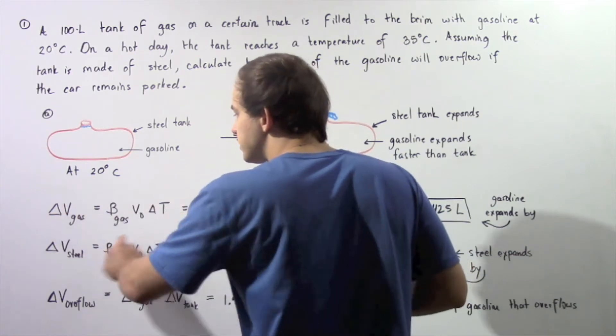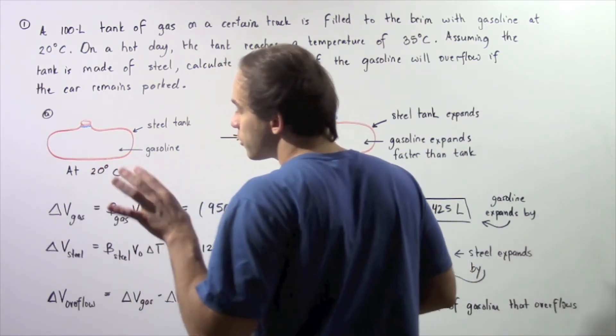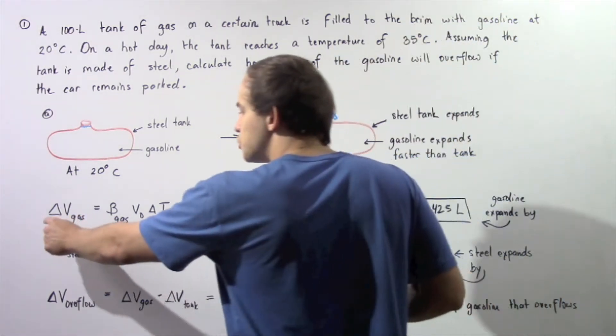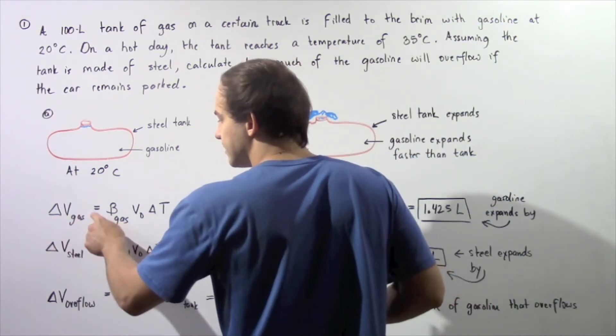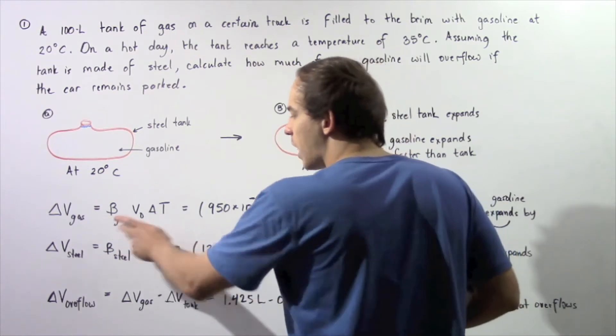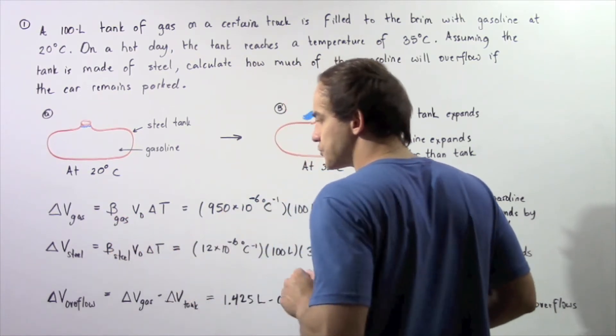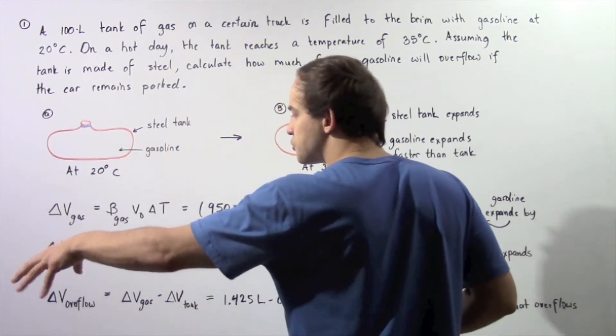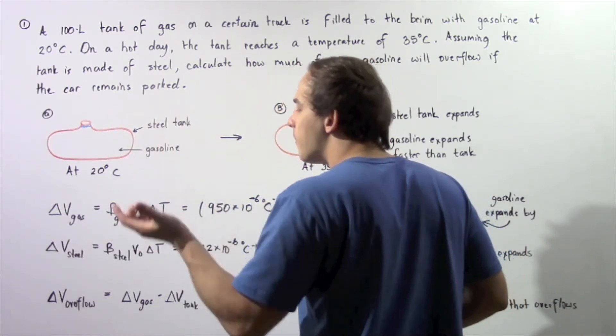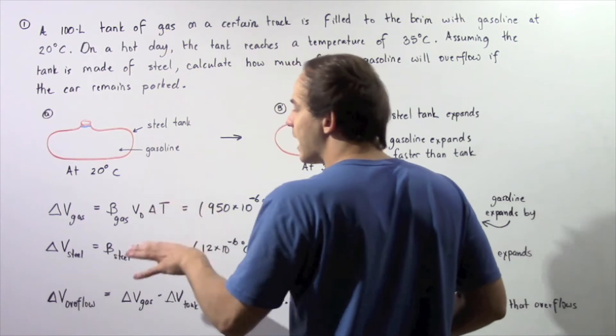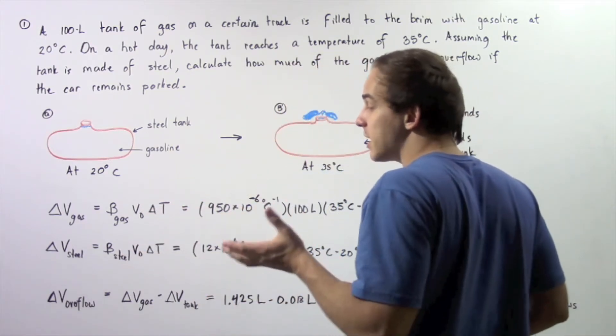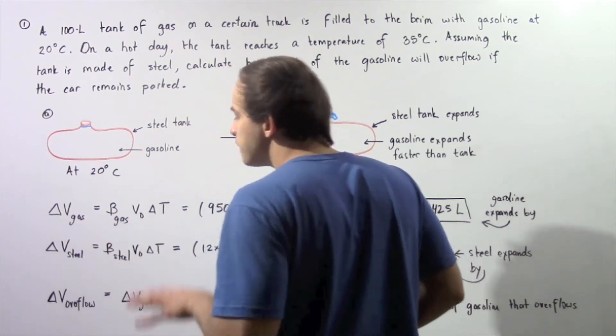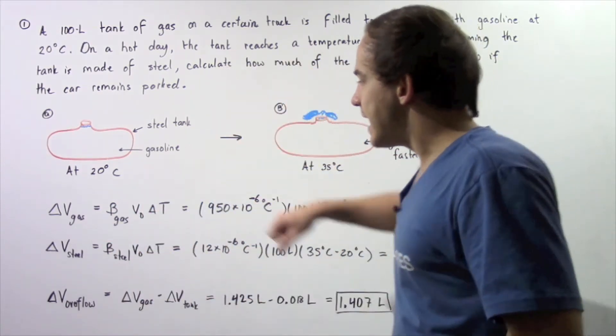So, we need to use the following equation for thermal volume expansion of liquids. Change in volume of the gasoline is equal to the product of these three factors. We have the change in temperature, the final temperature minus the initial temperature multiplied by the initial volume of our object or substance multiplied by the coefficient of volume expansion.